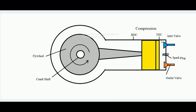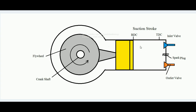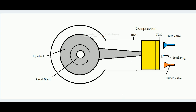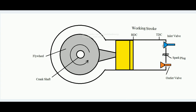The next stroke is the compression stroke. In this stroke, both valves remain closed and whatever charge was sucked in during the suction stroke is compressed to a smaller volume. At the end of compression, a spark is introduced — you can see this blue colored spark — due to which the entire fuel which was sucked inside burns, and the next stroke is the working stroke, meaning that burnt charge pushes the piston toward the bottom dead center.